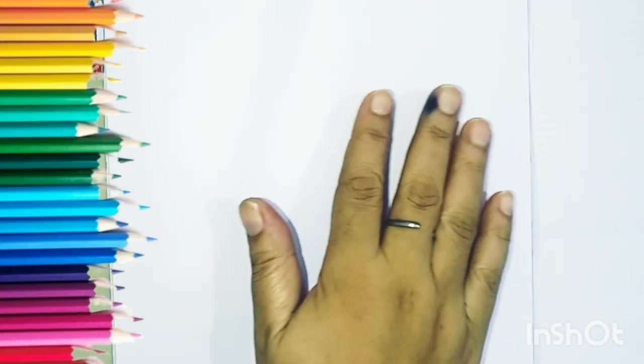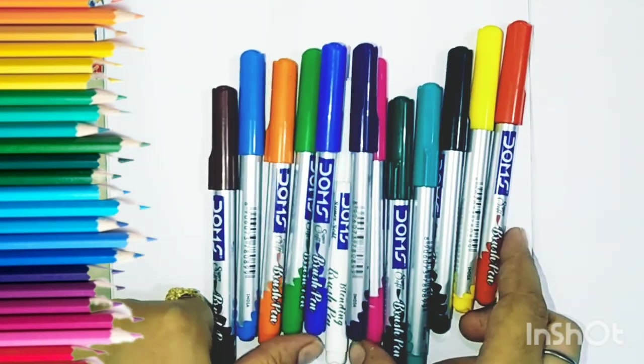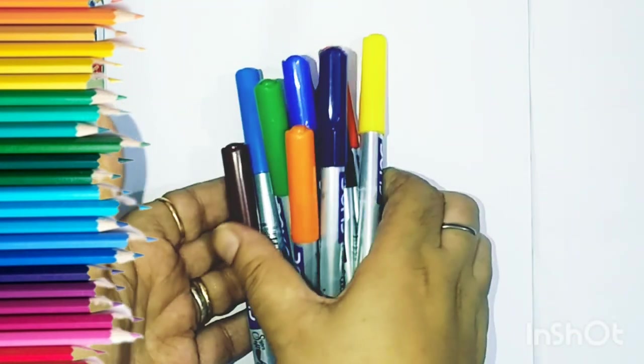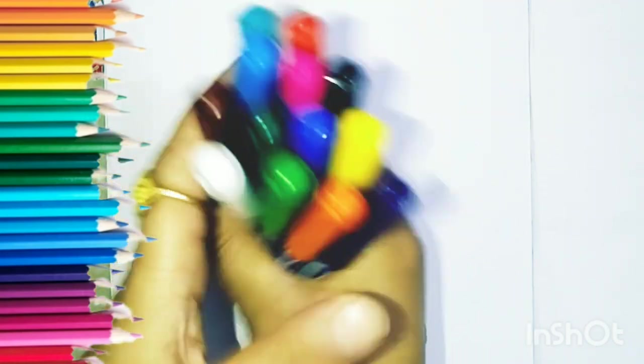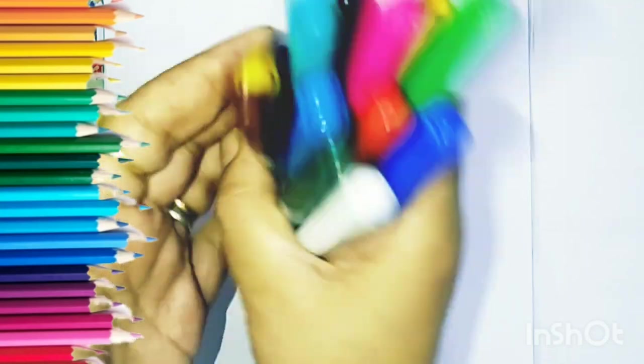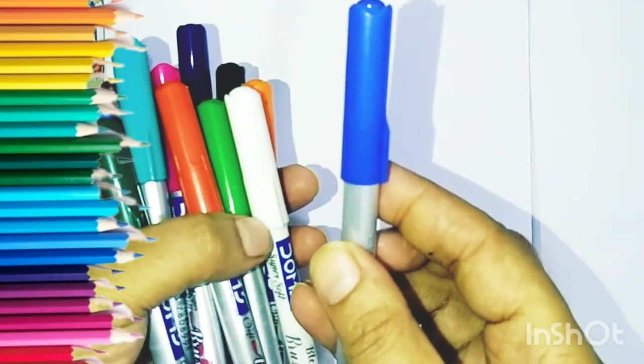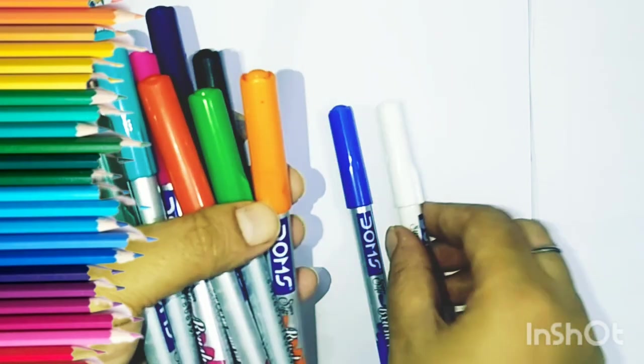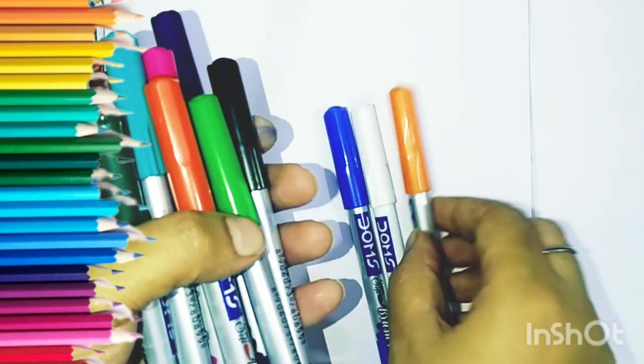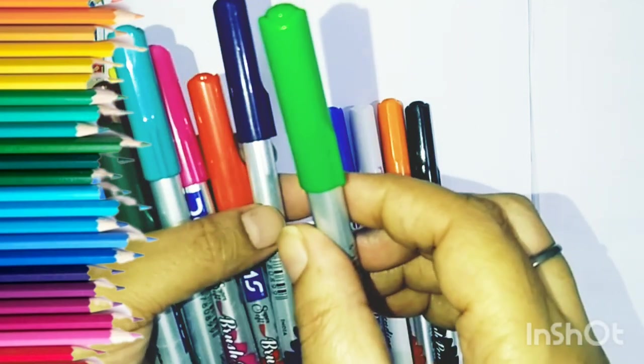Hello kids, now we welcome and learn the colors. Lots of beautiful colors. Now learn the colors, beautiful colors. Let us start. It's blue color, white color, orange color, black color, green color.